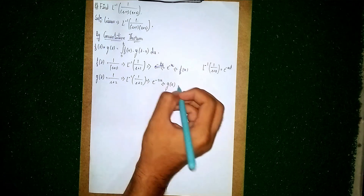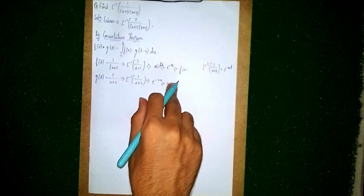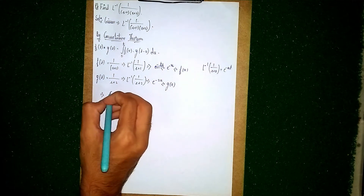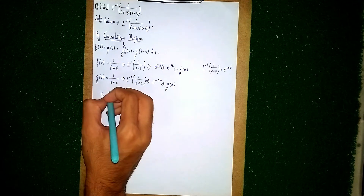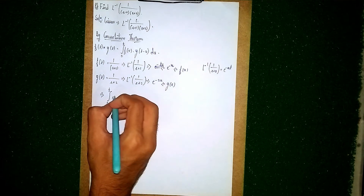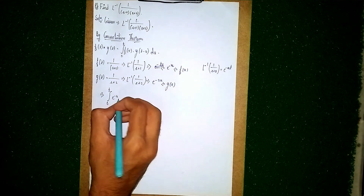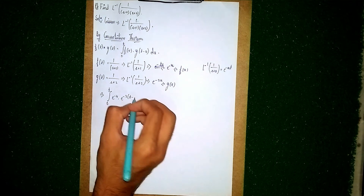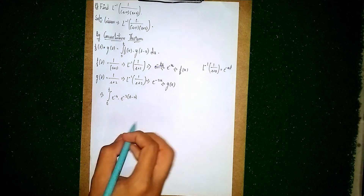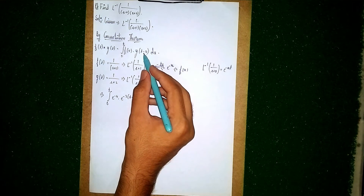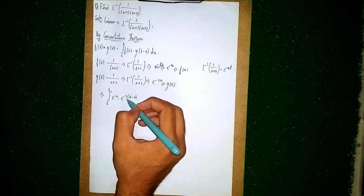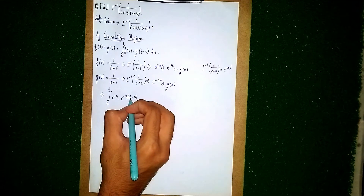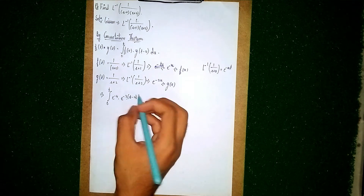Now apply these in the convolution theorem. It becomes the integral from 0 to t of f(u) — which is e to the power minus u — into g(t minus u). For g(t minus u), we substitute (t minus u) so we get e to the power minus 2(t minus u).